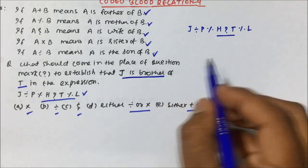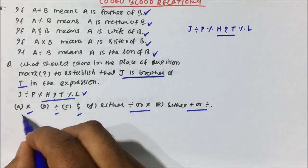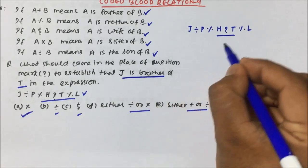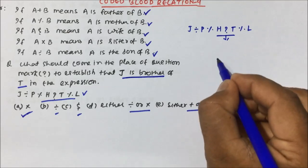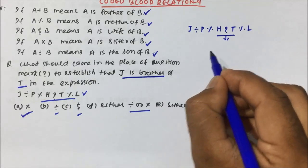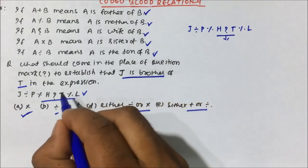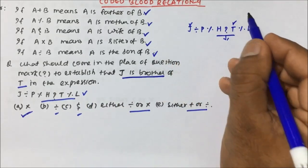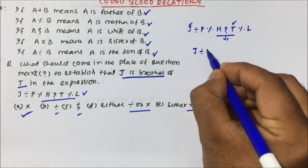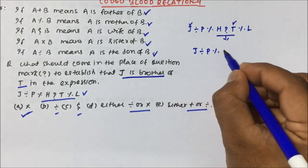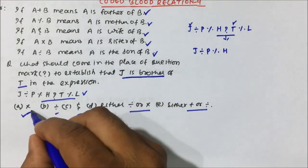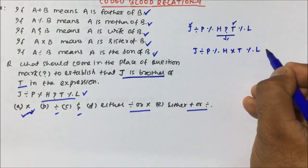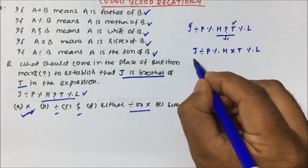We will start with Option A, which is multiplication. Instead of the question mark, I will put multiplication and see if I get the relation J is brother of T. So J is here and T is here. The expression becomes: J divided by P, percentage H, multiplication T, percentage L.